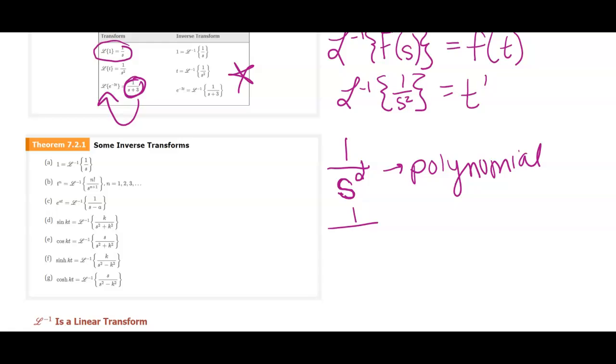However, if I have one over S minus a letter, where it's a linear term, that's going to track back to an exponential function. And if I have S squared plus something squared, then that's going to track back to sine or cosine.